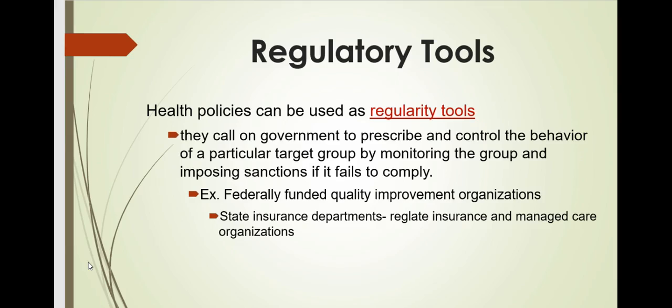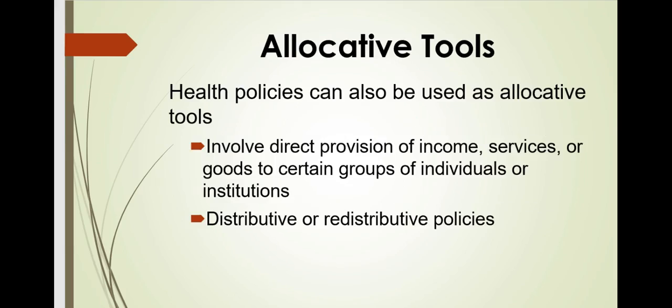There are two primary uses for health policy. The first is as a regulatory tool — health policies often serve a regulatory purpose. Examples include drug safety, air pollution control, and licensure and certification of facilities. The second use is as allocative tools, meaning they are used to allocate resources, involving direct provision of income, services, or goods to certain groups of individuals or institutions.